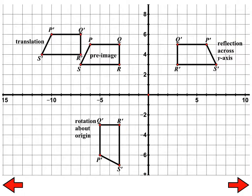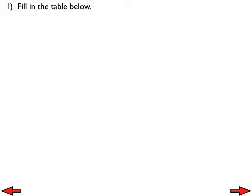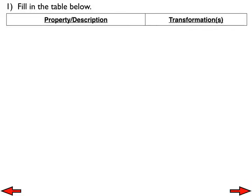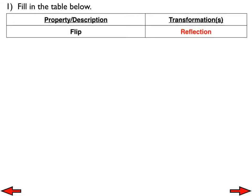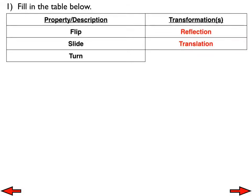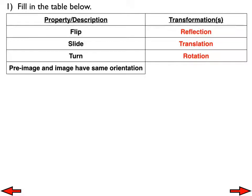Let's fill in the graph. A flip is a reflection — most of us knew that. A slide is a translation. A turn is a rotation. No issues so far. 'Pre-image and image have the same orientation' refers to translations and rotations. Both of those transformations preserve the same orientation.